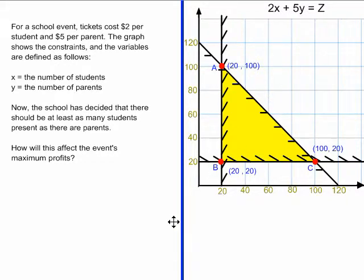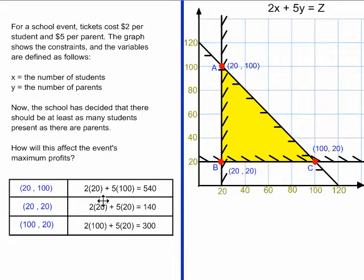The next thing you do is start building your table using the vertices that are already identified in the graph for you. Here's my table. The three vertices 20, 20, 120, and 2100 are already in there. And I plug all three of those vertices into this optimization function.